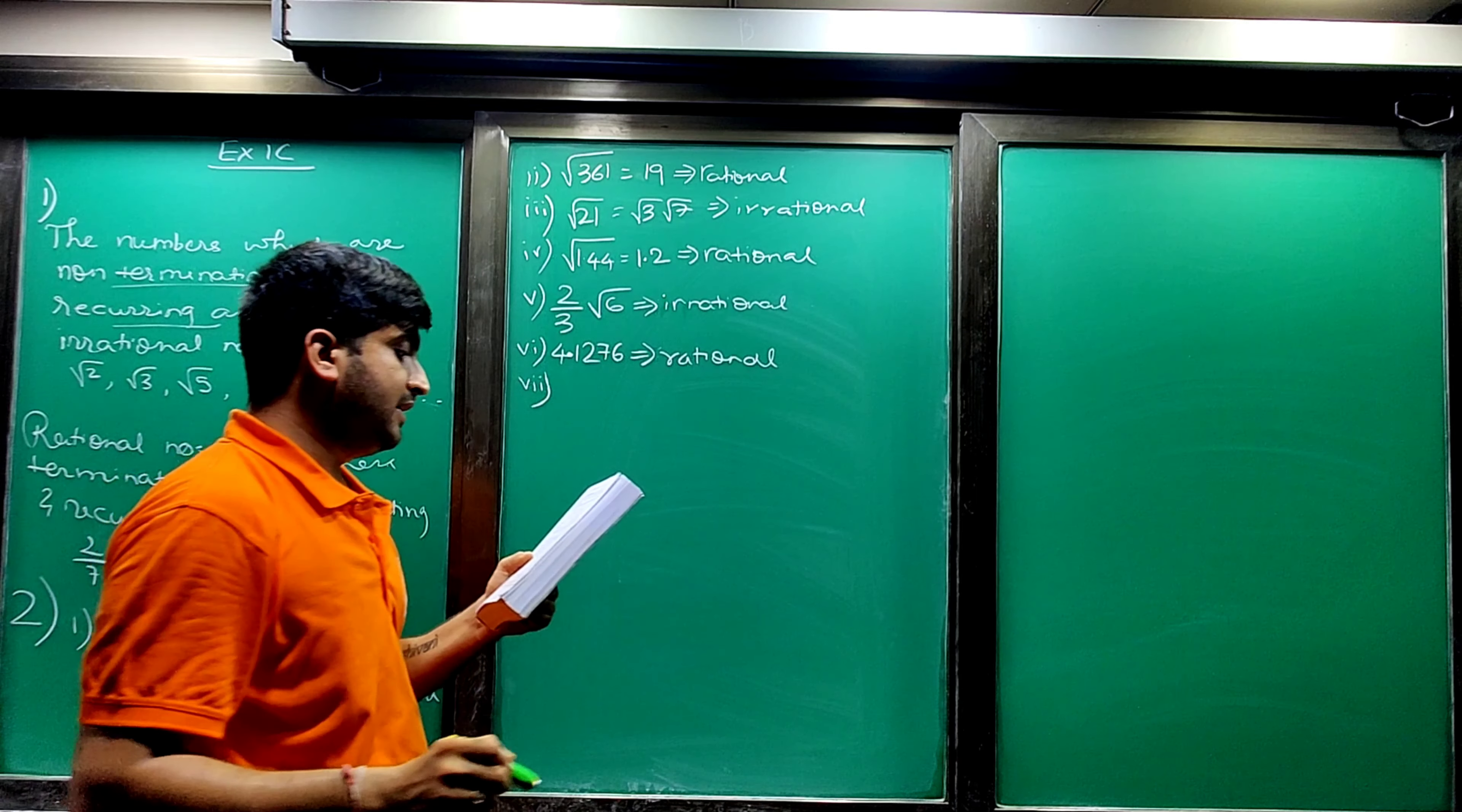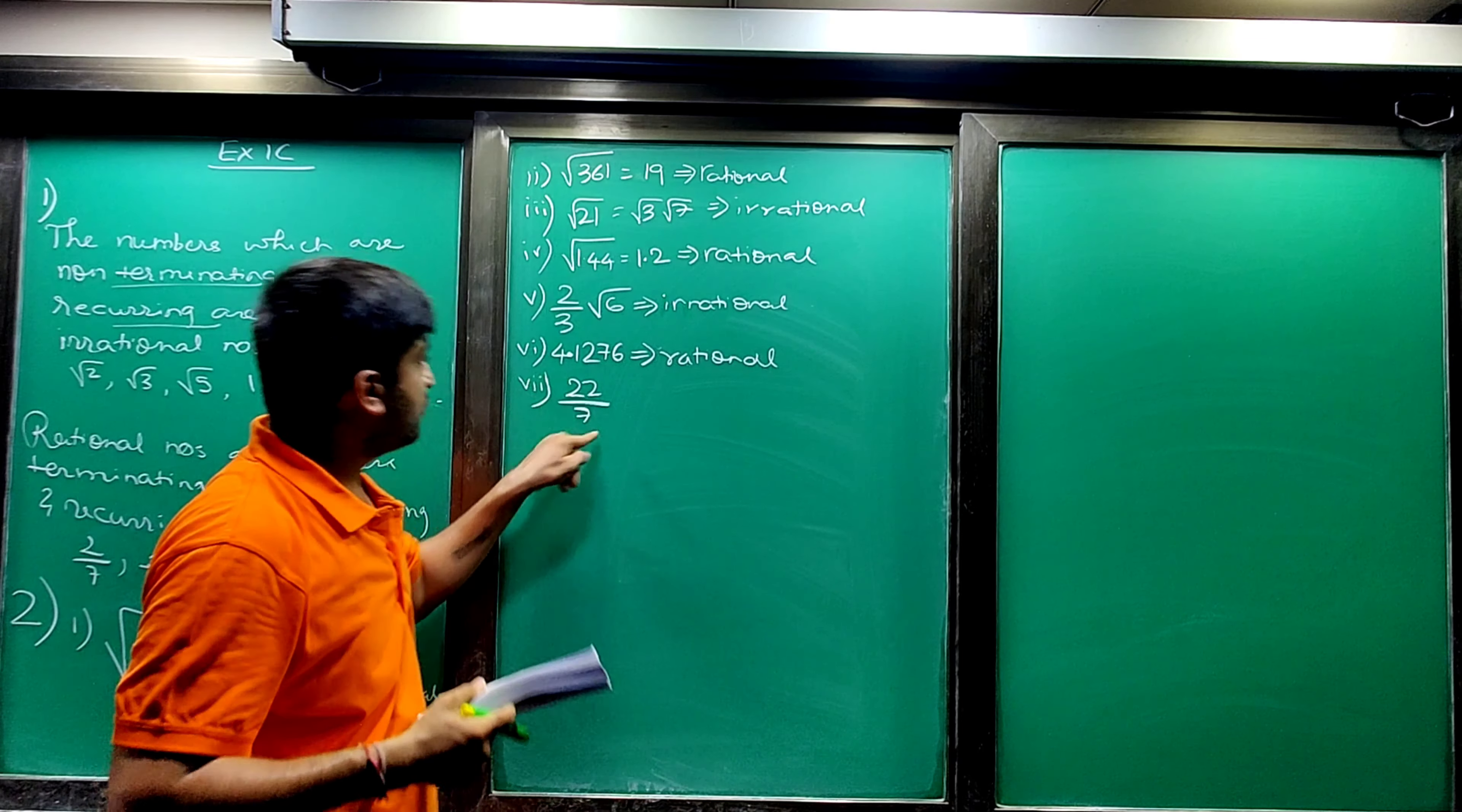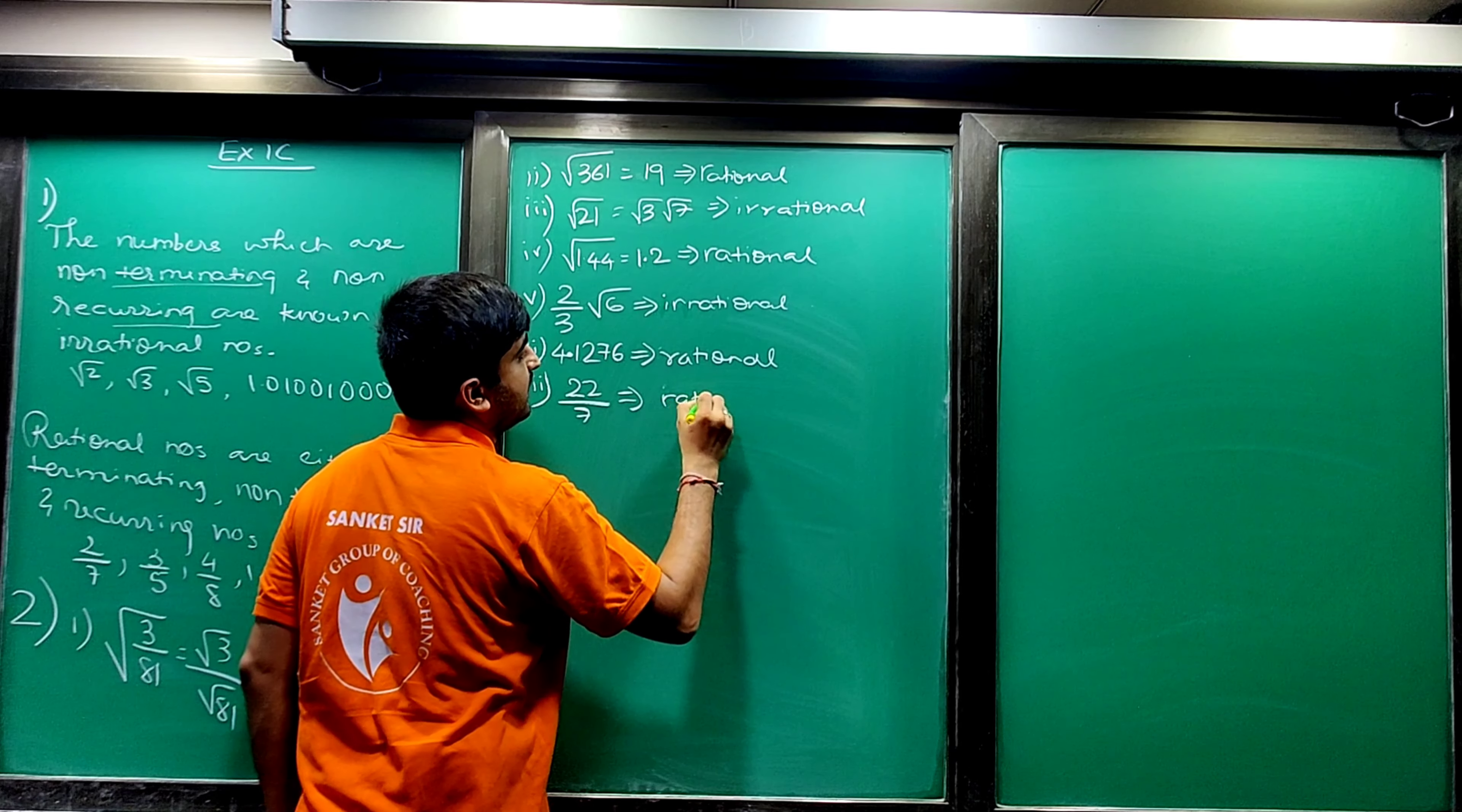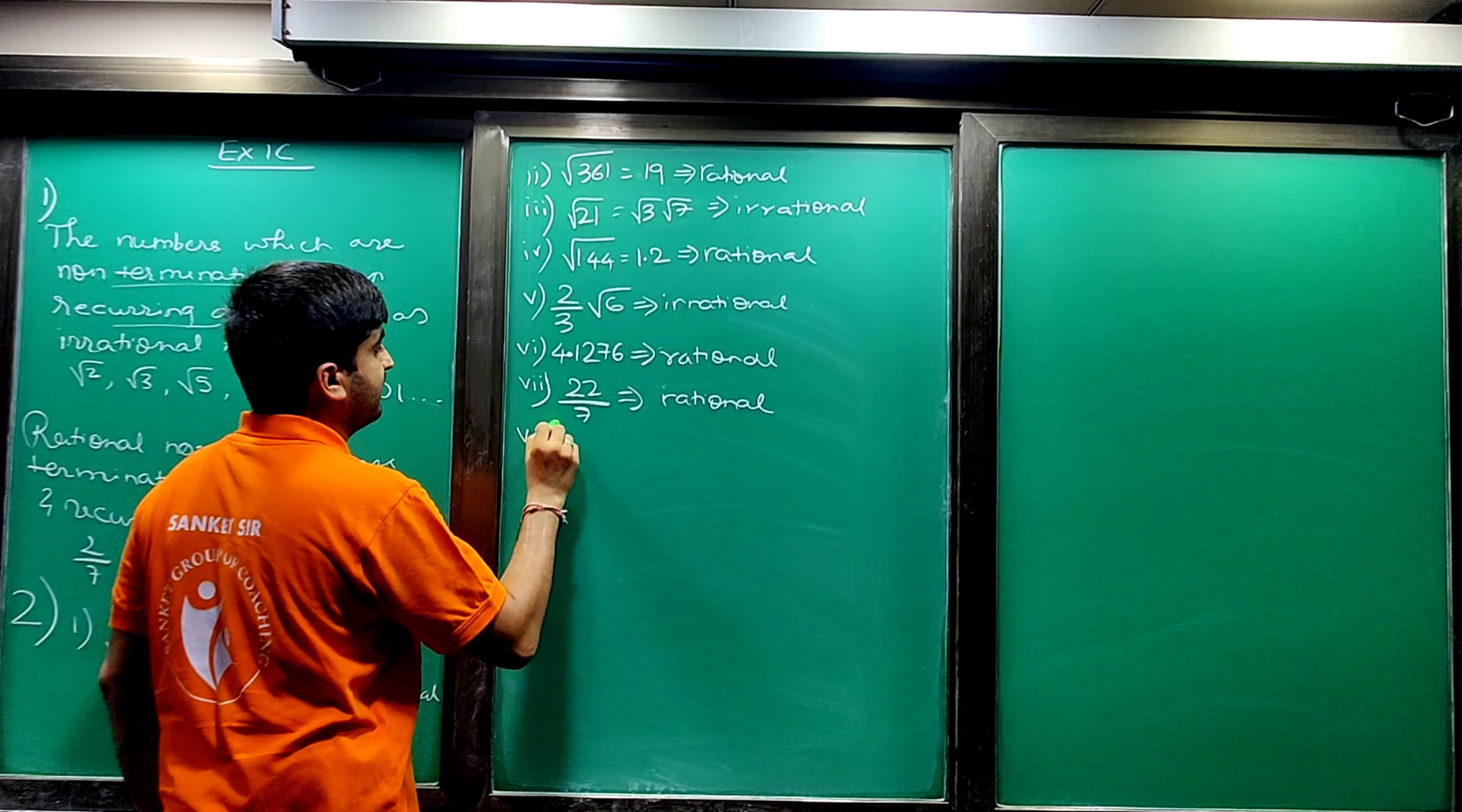Seventh: 22 by 7. Do not consider this as pi. 22 by 7, your fraction is there. So your answer is rational number.